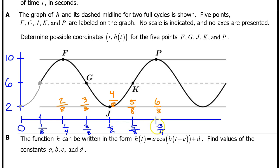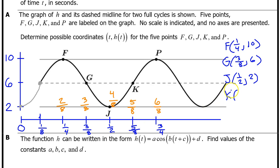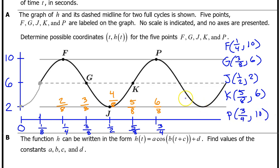At this point, we have all of the input values and all of the output values for the five points. The coordinates are: point F at (1/4, 10), point G at (3/8, 6), point J at (1/2, 2), point K at (5/8, 6), and point P at (3/4, 10). That's it for Part A.